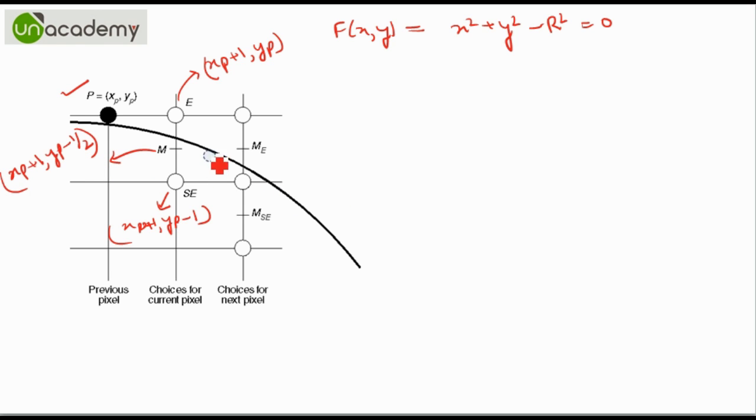And the midpoint would be (XP+1, YP-1/2). So we will have to decide between this point and this point. At every junction we will have to select between the East point or the Southeast point of the current pixel based on M.